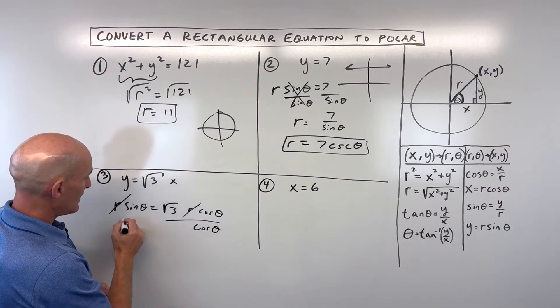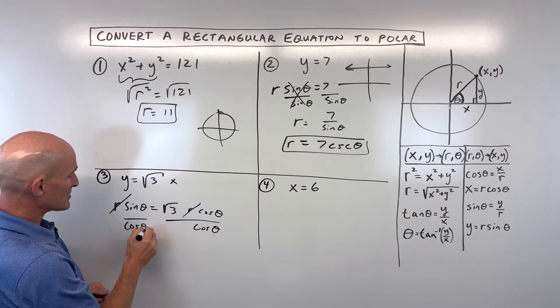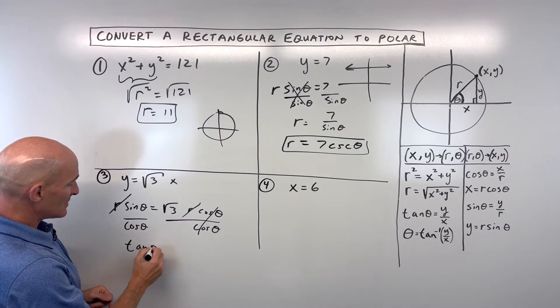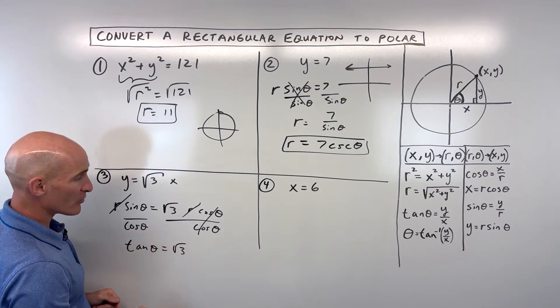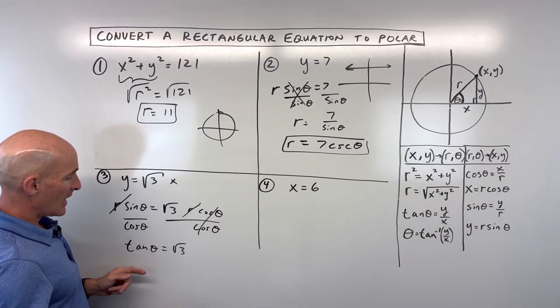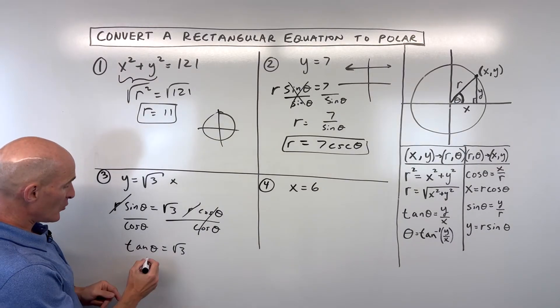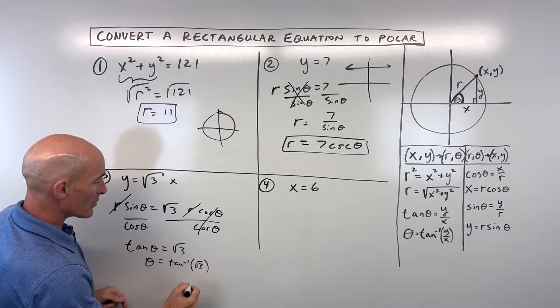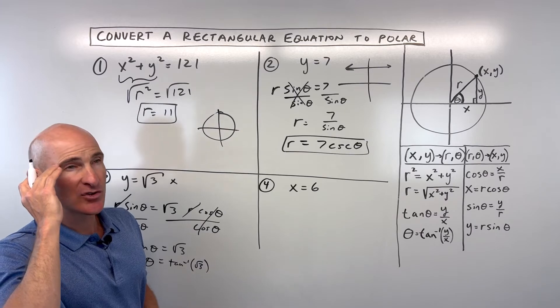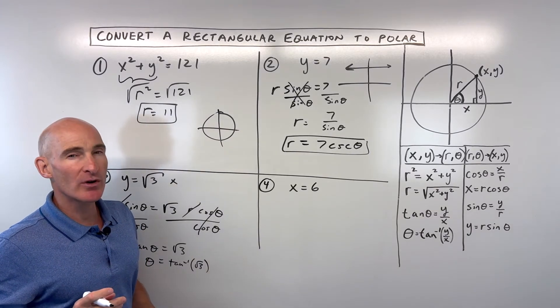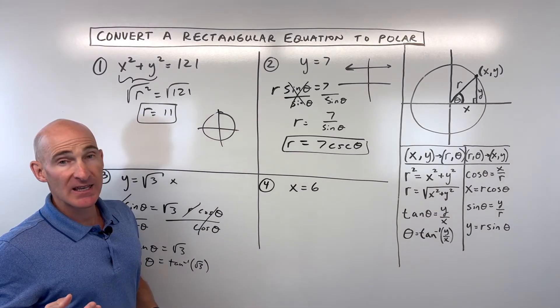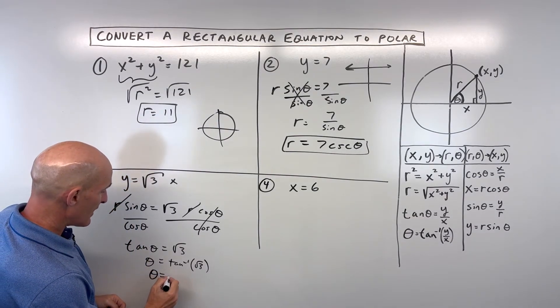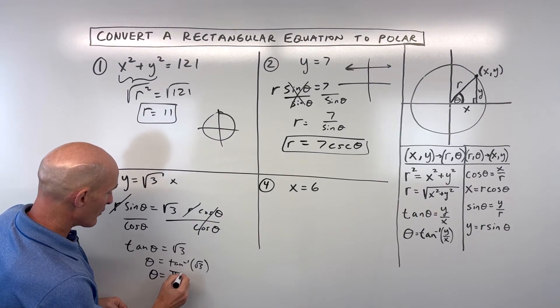Now you might be saying, Mario, why are you dividing by cosine theta? Well, sine over cosine, I know that's equal to tangent. So tangent of theta equals square root of 3, right? And if I take the tangent inverse of both sides, theta equals the tangent inverse of square root of 3. Now you know from the unit circle, tangent of what angle equals square root of 3? Well, that's a 60 degree angle, or in radians, that's pi over 3. So this is really theta equals pi over 3.